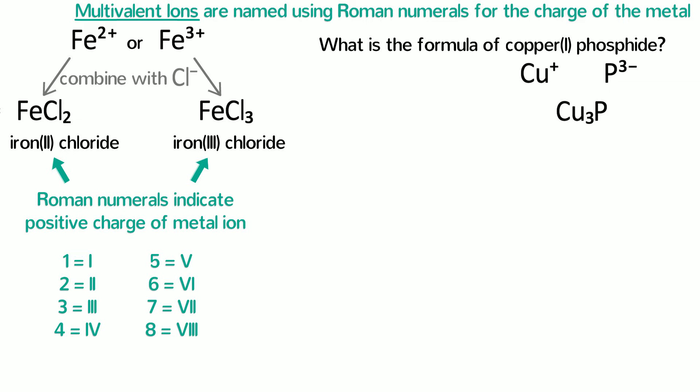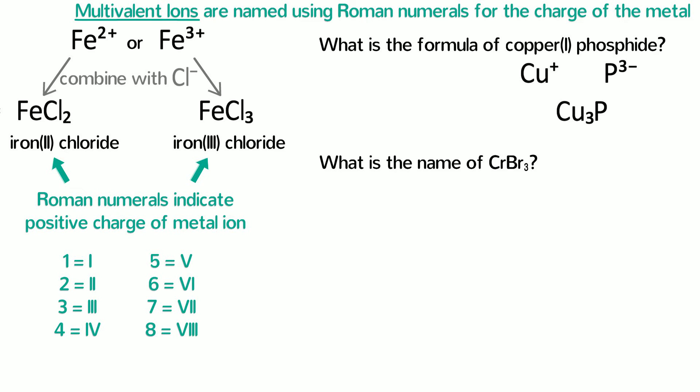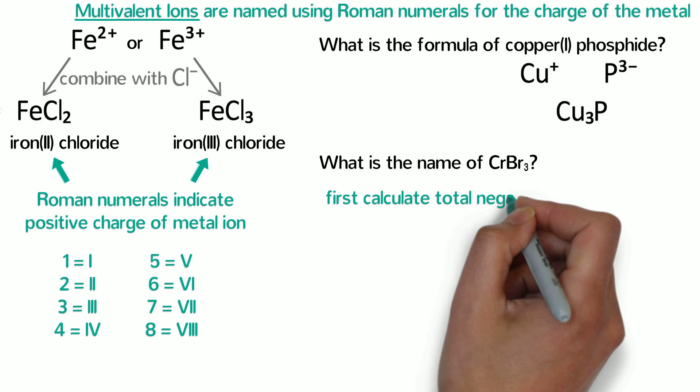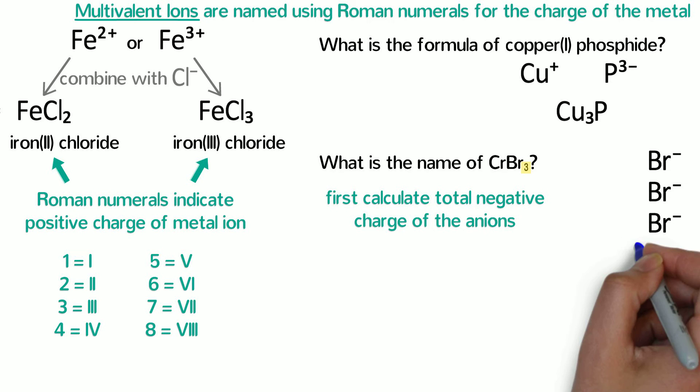Going from the formula to the name is a little harder. What is the name of CrBr3? Because we don't know the charge of chromium in this compound, it's important to first calculate the total negative charge of the anions. Bromine is a halogen in the next to last column of the periodic table, so bromide has a negative 1 charge. The 3 after Br means there are 3 bromides in the formula, so the total charge of the anions is negative 3.